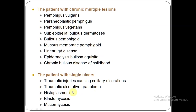Under patient with chronic multiple lesions, you have a list of vesiculobullous lesions: pemphigus vulgaris, paraneoplastic pemphigus, pemphigus vegetans, sub-epithelial bullous dermatosis, bullous pemphigoid, mucous membrane pemphigoid, linear IgA disease, epidermolysis bullosa acquisita, and chronic bullous disease of the child. Under patient with single ulcers, you have traumatic injuries causing solitary ulcerations — that is traumatic ulcers — and traumatic ulcerative granuloma, which is your eosinophilic granuloma of the tongue.